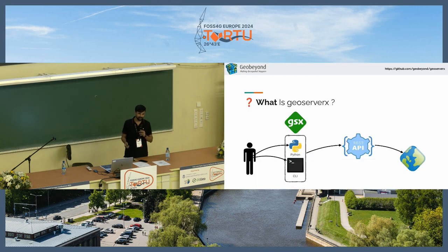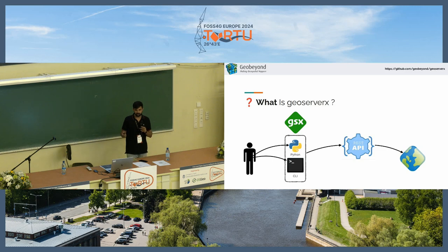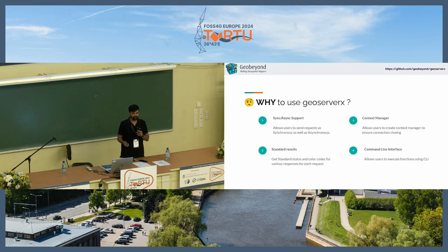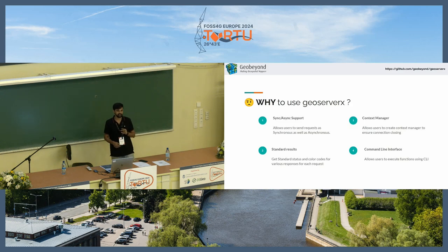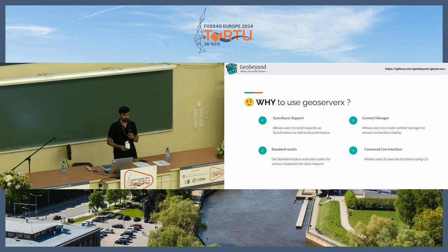In very simple terms, you send a request either as a Python package or via CLI, which is GSX, and then you send a request to GeoServer as a REST API, get the data back, and that's all. We support synchronous and asynchronous requests, and we also have a context manager approach. We are trying to standardize the results with color coding and the response codes, and we are also providing a command line interface to execute these same functions.